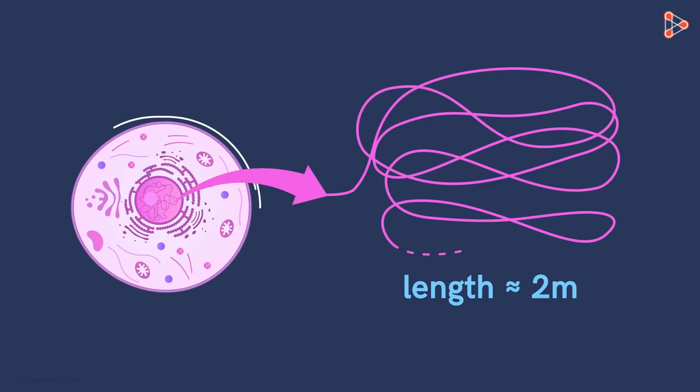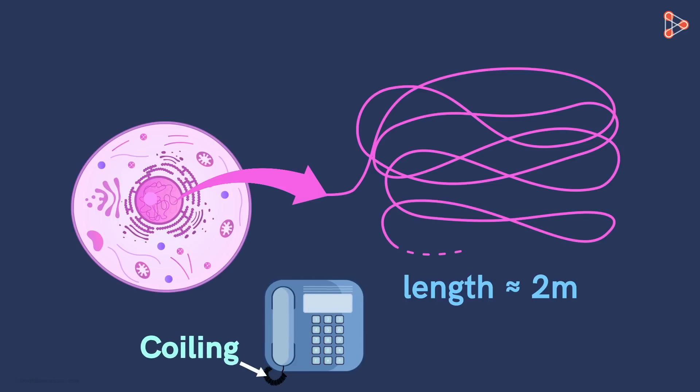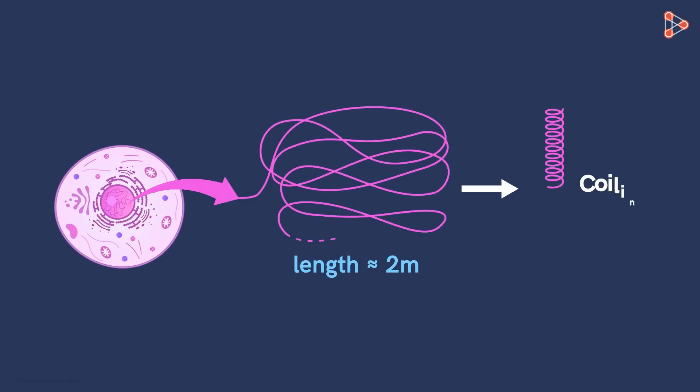We know that a cell is extremely tiny, and the nucleus occupies a very small portion of the tiny cell! So how does such a long stretch of DNA fit into such a tiny space? The answer is quite simple! How do we fit a long telephone wire in a small space? That's right! Using the process of coiling! Similarly, coiling the DNA helps reduce its volume and fits it into the tiny nucleus!